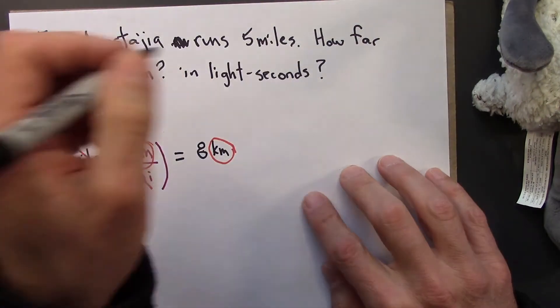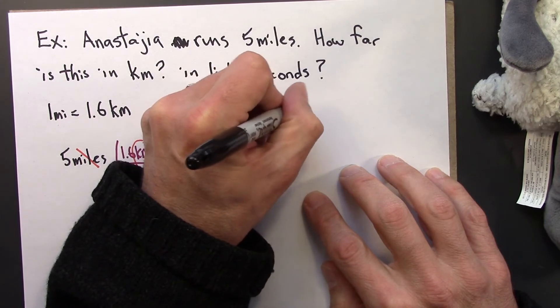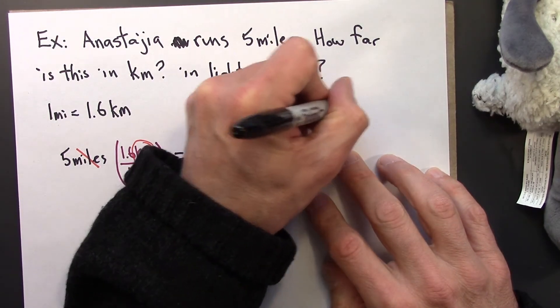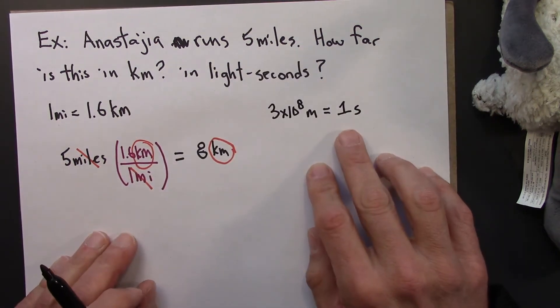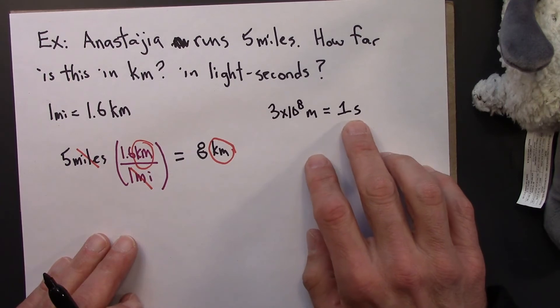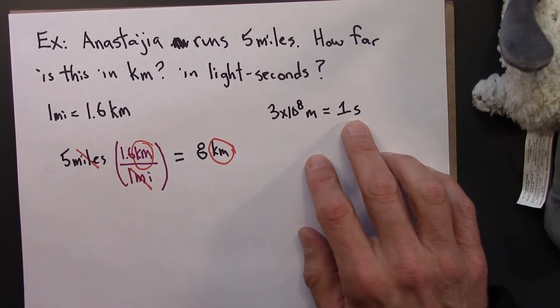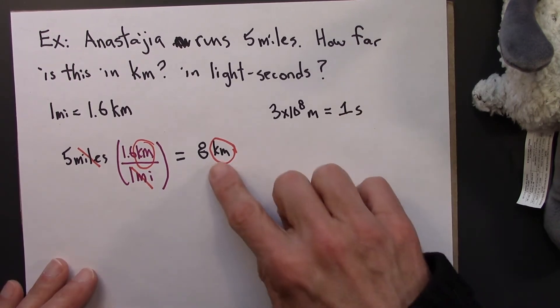So I'm going to write this as 3 times 10 to the 8 meters is one second. And I'm using a shorthand here. I'm taking a little bit of a shortcut. I'm just going to say seconds instead of light seconds. So it's understood that when we give a time like this, it's for distance. It's in terms of the speed of light.